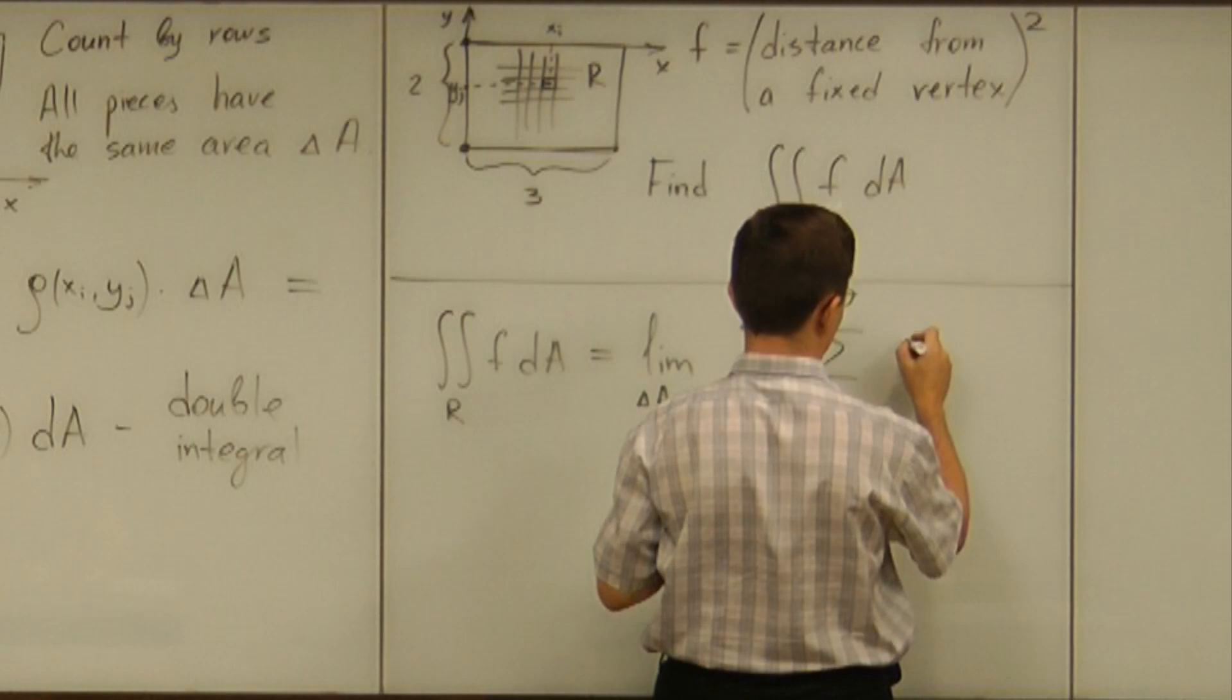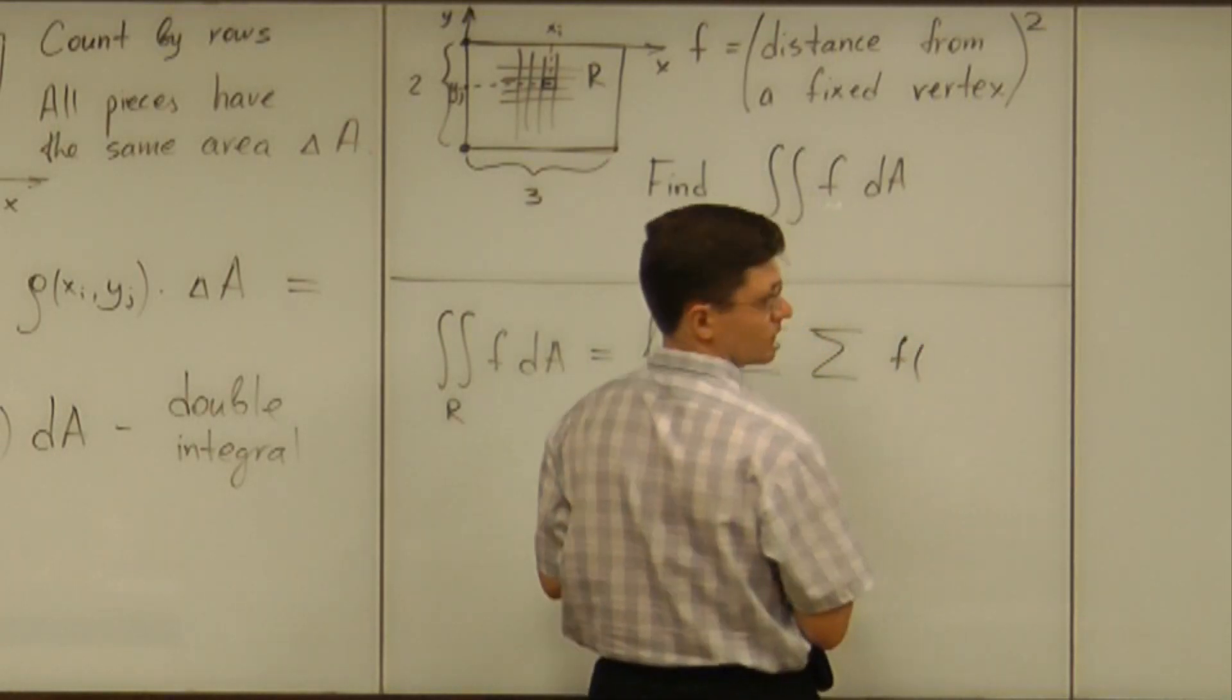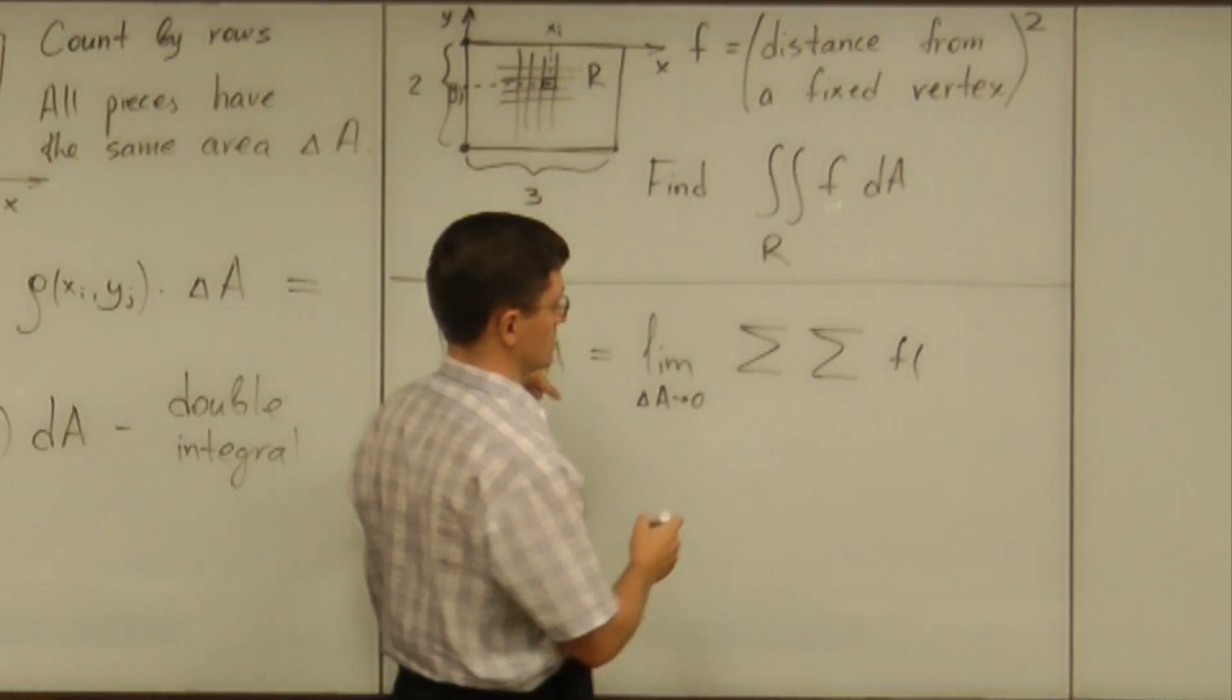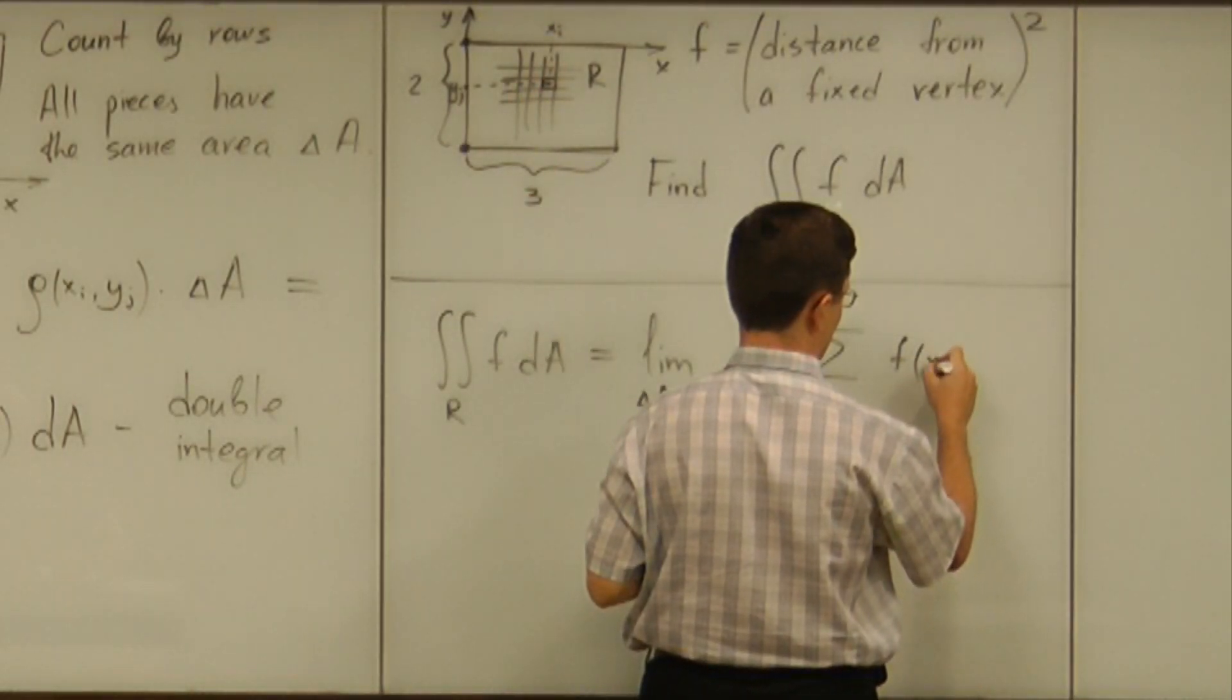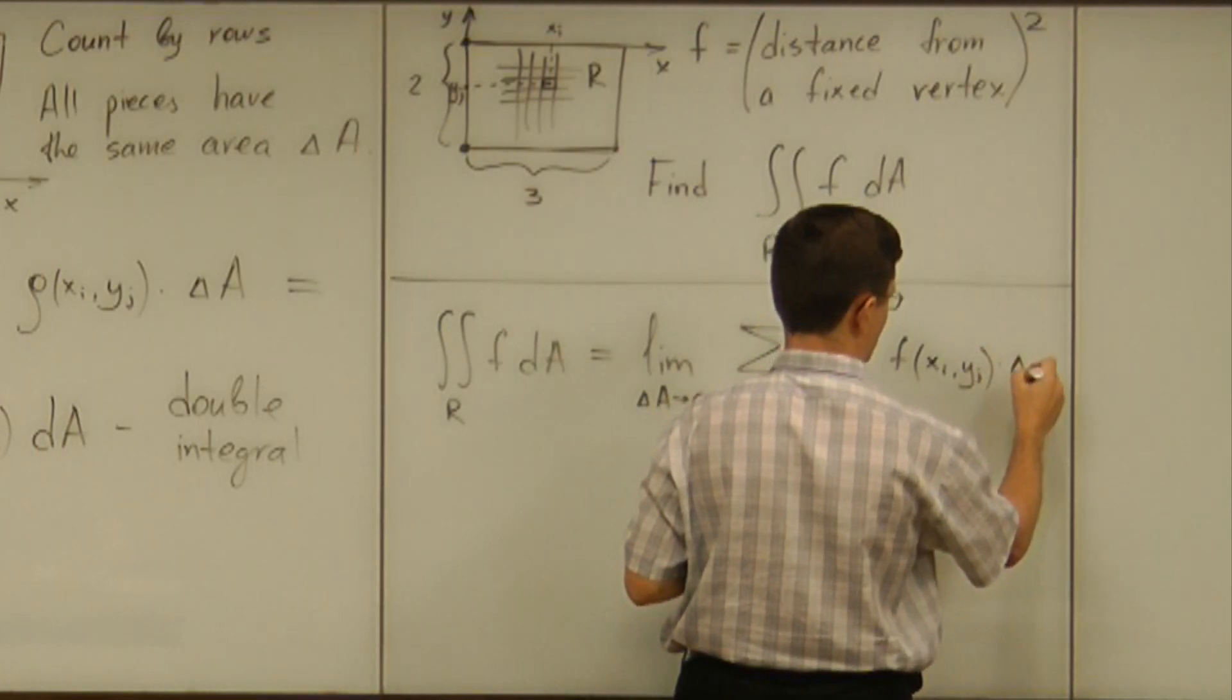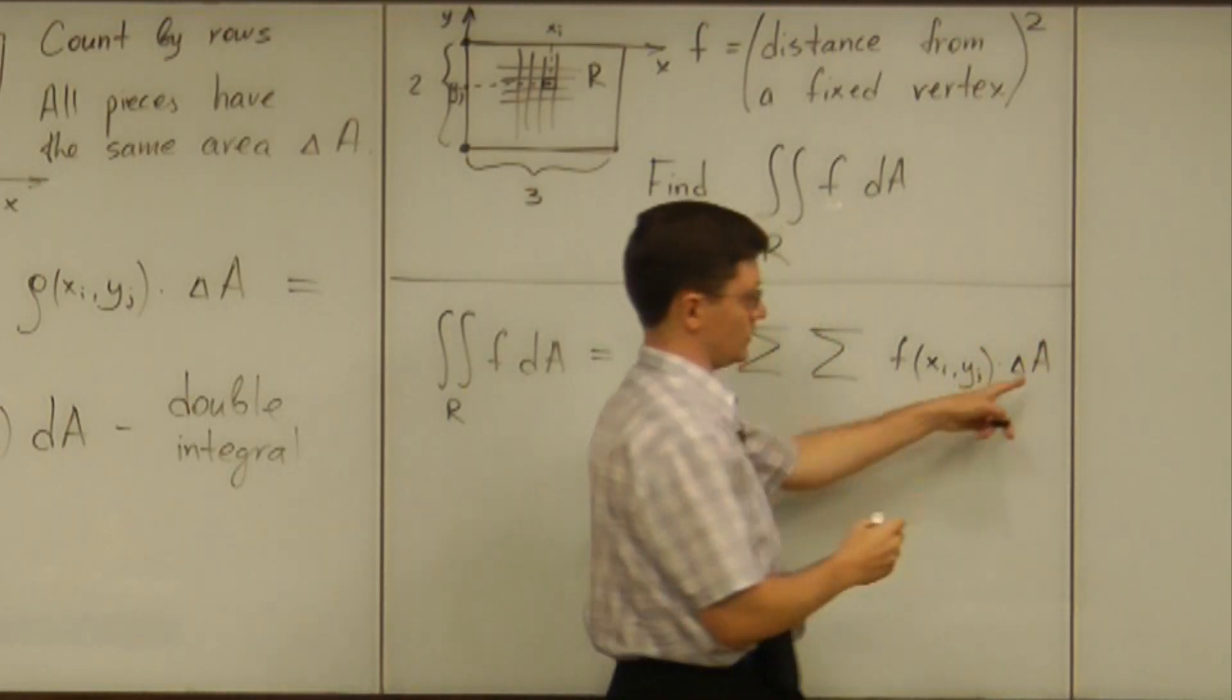So, what we have to integrate is the function F. Now, considering the piece with indices i and j, you have to compute the function at the point x_i, y_j, and multiply it by, multiply that value by delta A.